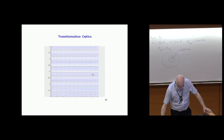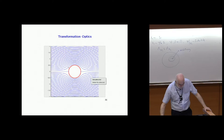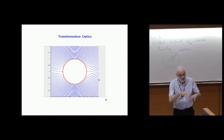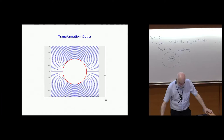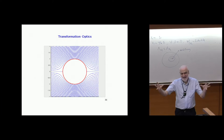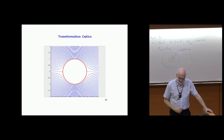That's the whole idea of transformation optics: blowing up a point. Here's the movie showing a point being transformed into this ball. You can see how the rays of light are being curved around the object. As I already told him, invisibility is much easier than visibility — to hide something is much harder than to find it.